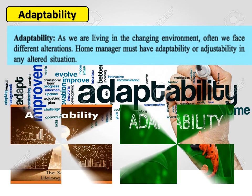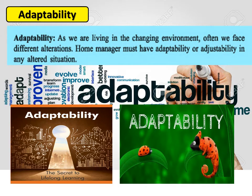The sixth quality is adaptability. As we are living in a changing environment, we often face different situations. The home manager must have adaptability or adjustability in any altered situation. For example, if any person becomes sick in a family, he or she stays at home and proper care must be given, or the person can be admitted to a hospital if the doctor suggests. In this case, by adapting to the situation, all functions should be done. The home manager should have the ability to adjust in any type of situation.